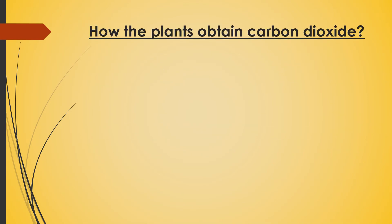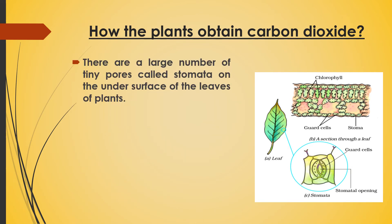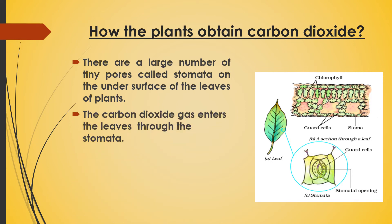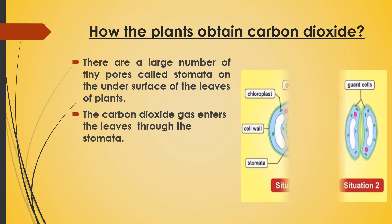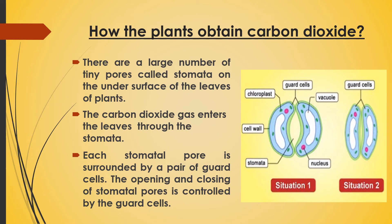Now we will discuss how plants obtain carbon dioxide. There is a figure showing: A — a leaf, B — a section through a leaf, C — stomata. There are a large number of tiny pores called stomata on the under surface of the leaves. Carbon dioxide is present in the atmosphere and enters the leaves through the stomata. Oxygen produced during photosynthesis is also released through stomata. Stomata are minute openings surrounded by bean-shaped guard cells. The opening and closing of stomata pores is controlled by guard cells.